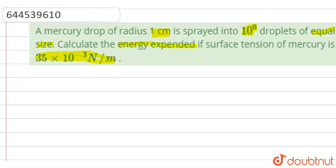Naturally this question is based on surface tension. We are taking the radius of the bigger drop as capital R equal to 1 cm. This is the value of the number of small droplets. We will be denoting it by small n and this is equal to 10 raised to 6 and all small drops are of equal size.